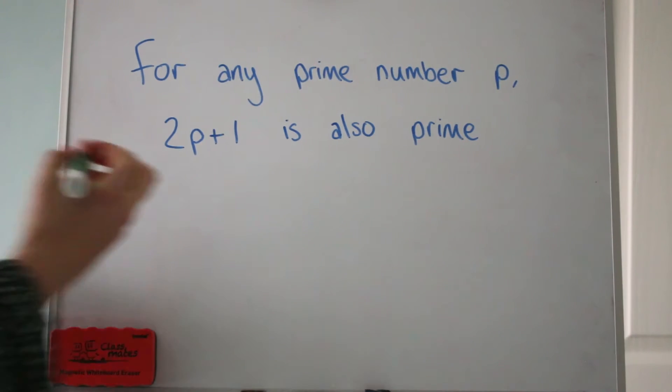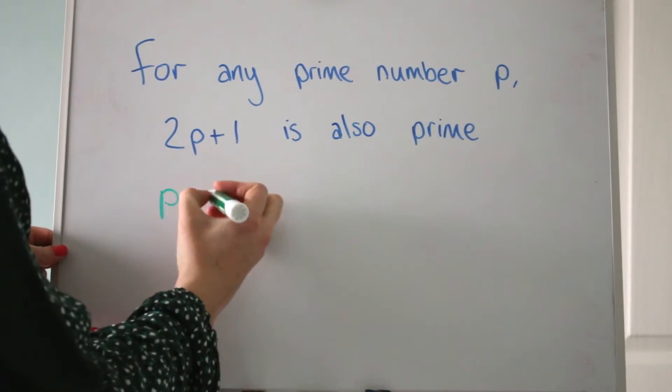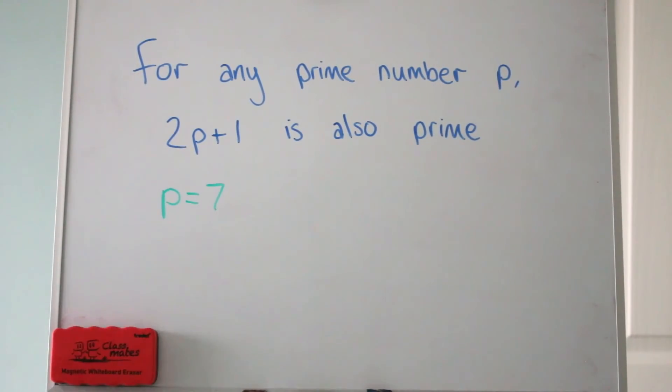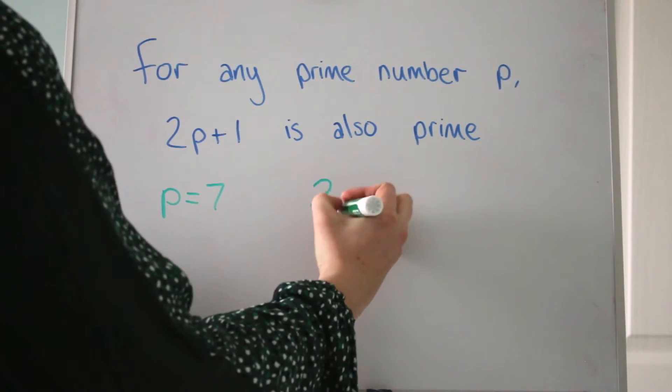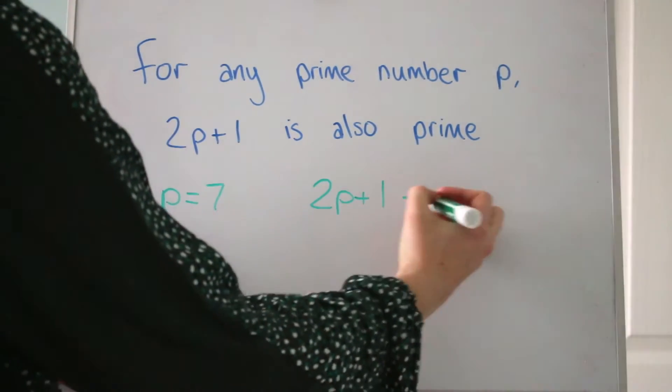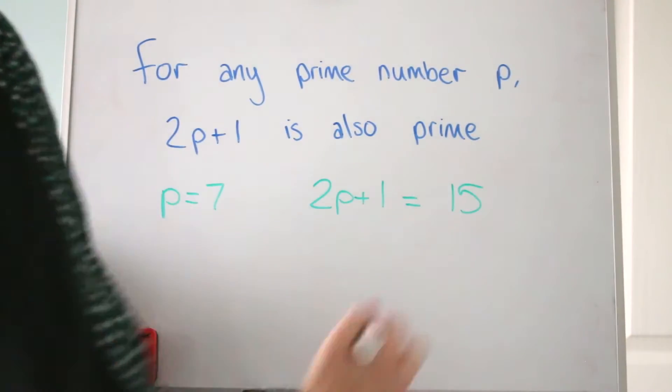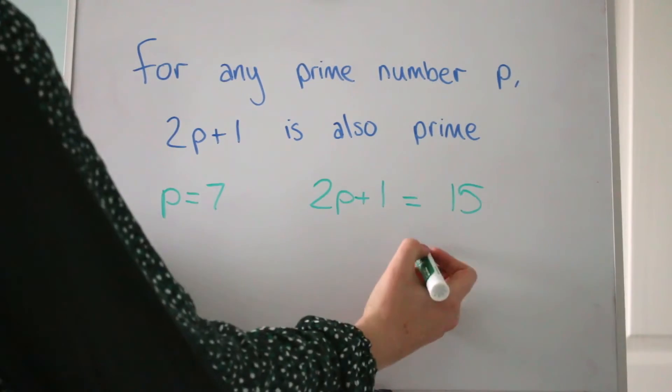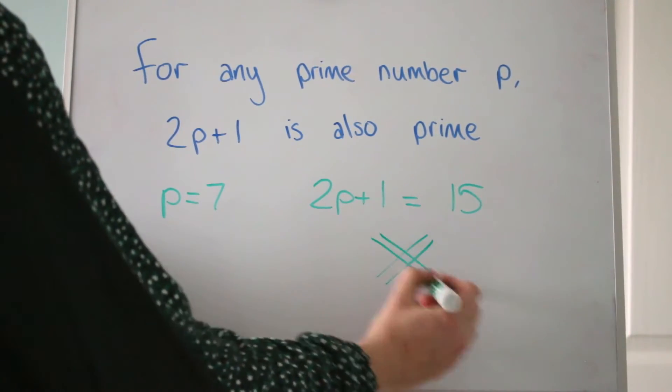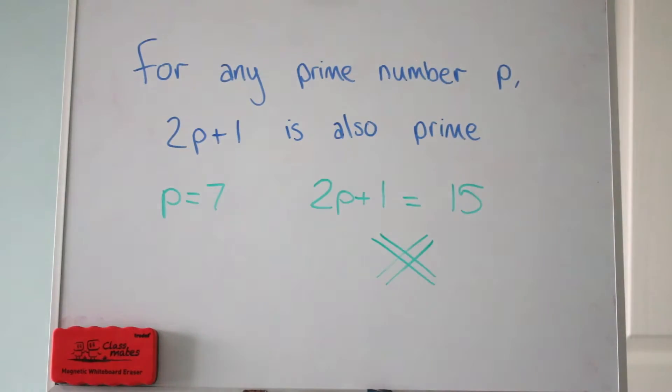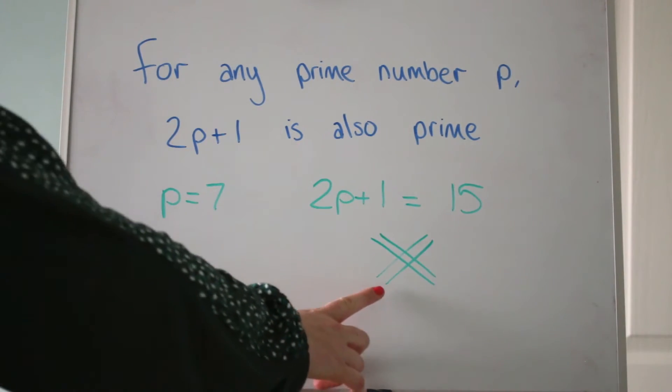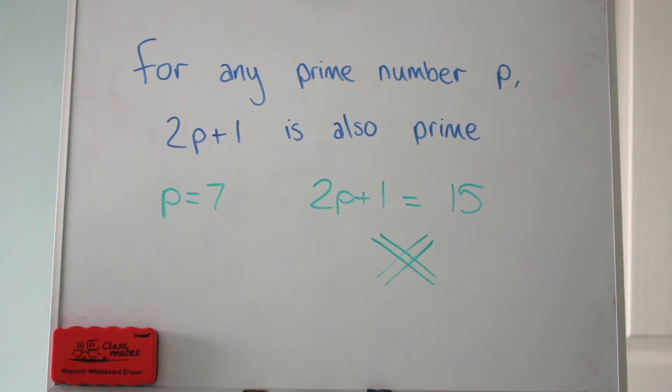Do pause the video and try and have a go yourself. There are a few counter examples that you could choose, but the first one I found was 7. So p is 7, that is a prime number, but when we put it into 2p plus 1, that would be 15. 2 times 7 plus 1 is 15, and 15 is not a prime number, so it's not true and we disproved it.